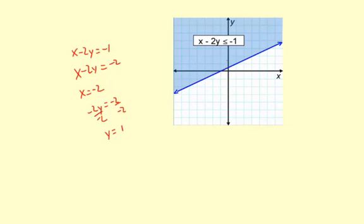Here are our intercepts. So the x would be at negative 2, y would be at positive 1, and the pattern would continue like this. So there's our line. Notice it's parallel to the original boundary line.